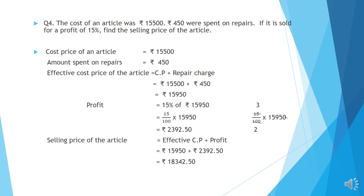Question number 4. The cost of an article was Rs. 15,500. Rs. 450 were spent on repairs. If it is sold for a profit of 15%, find the selling price of the article. Effective cost price equals CP plus repair charge: Rs. 15,500 plus Rs. 450 equals Rs. 15,950. This is the effective cost price.